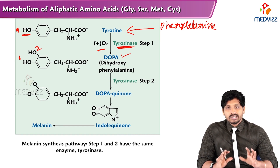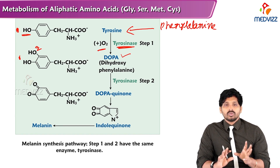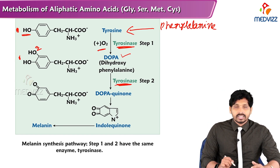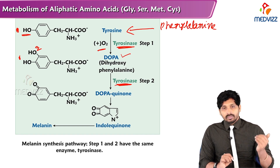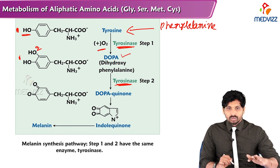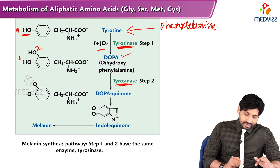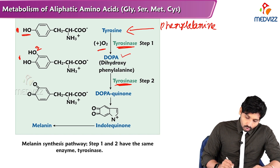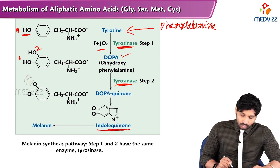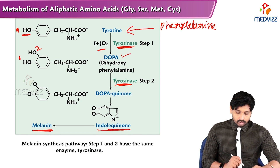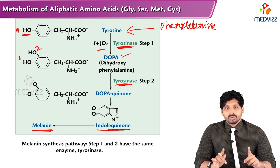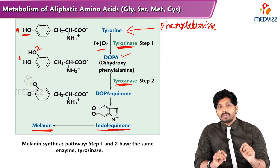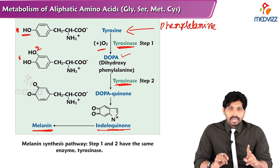The main function of tyrosinase is to add a hydroxyl group to tyrosine to convert it to dihydroxyphenylalanine. The same enzyme then converts DOPA into DOPA quinone by removing hydrogens from the hydroxyl groups. DOPA quinone is then converted to indole quinone and then to melanin. The key enzyme to remember in melanin formation is tyrosinase.